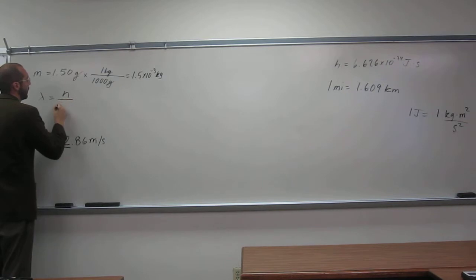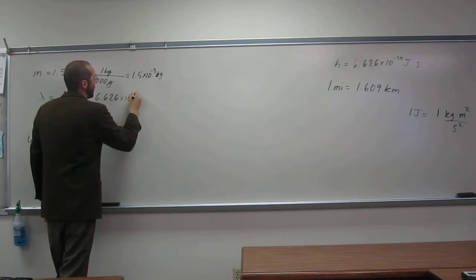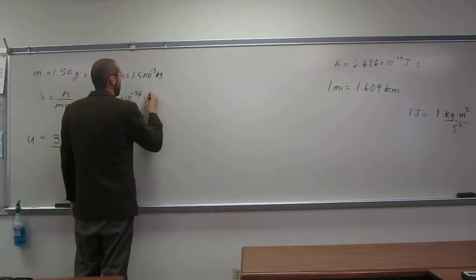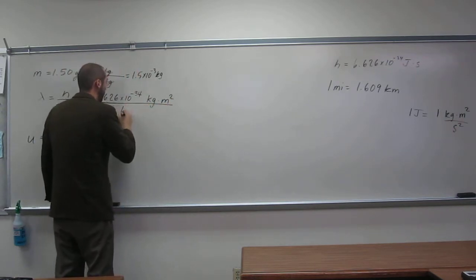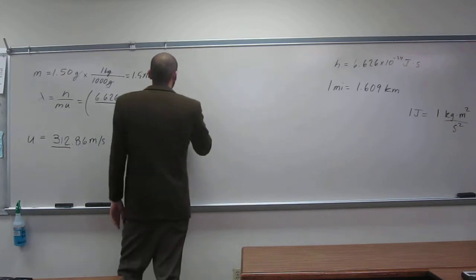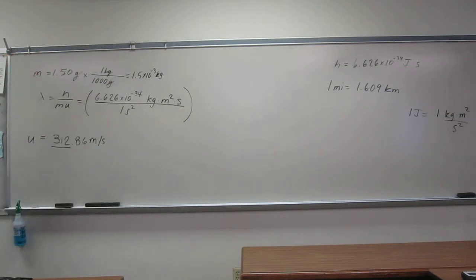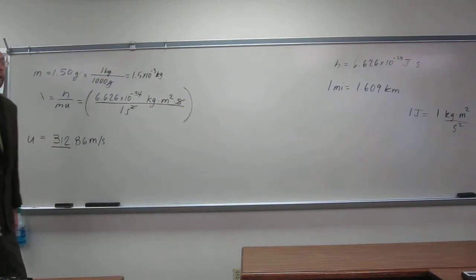So wavelength is Planck's constant. Planck's constant is 6.626 times 10 to the negative 34 joules. What did we say joules was? It was kilograms meters squared per second squared. So I'm going to put that instead of joules: kilograms meters squared per one second squared. But it's joule seconds, right? So we've got to also multiply the numerator by seconds there. Planck's constant is in units of joule seconds. Don't let it trick you. When we do that, we cancel out our seconds there.